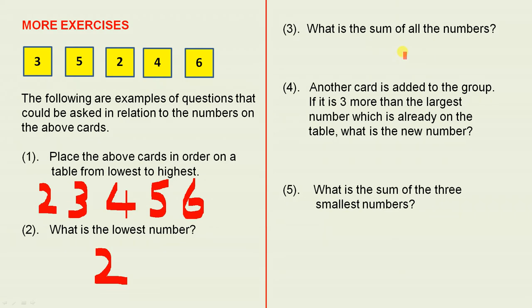What is the sum of all the numbers? Sum means you add them up. So 2 plus 3 gives you 5, 5 plus 4 gives you 9, 9 plus 5 gives you 14 and 14 plus 6 gives you 20. So when you add the numbers up, you get 20.